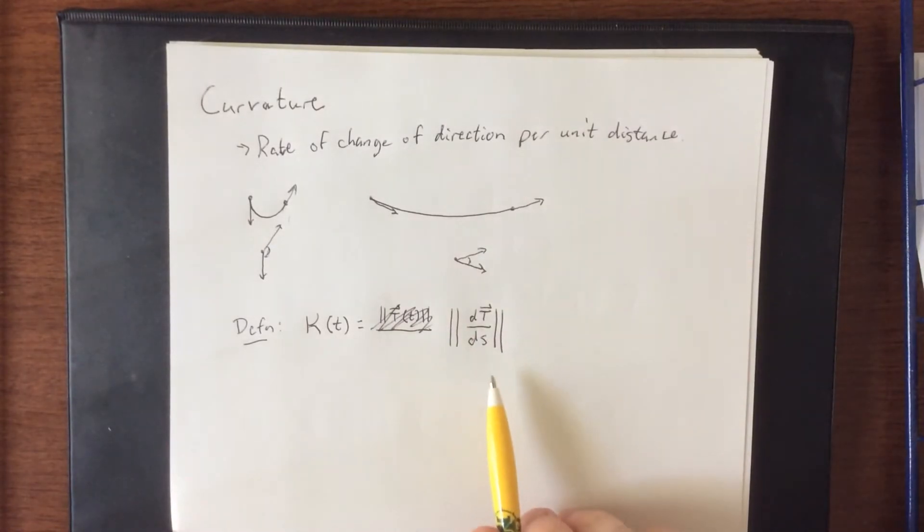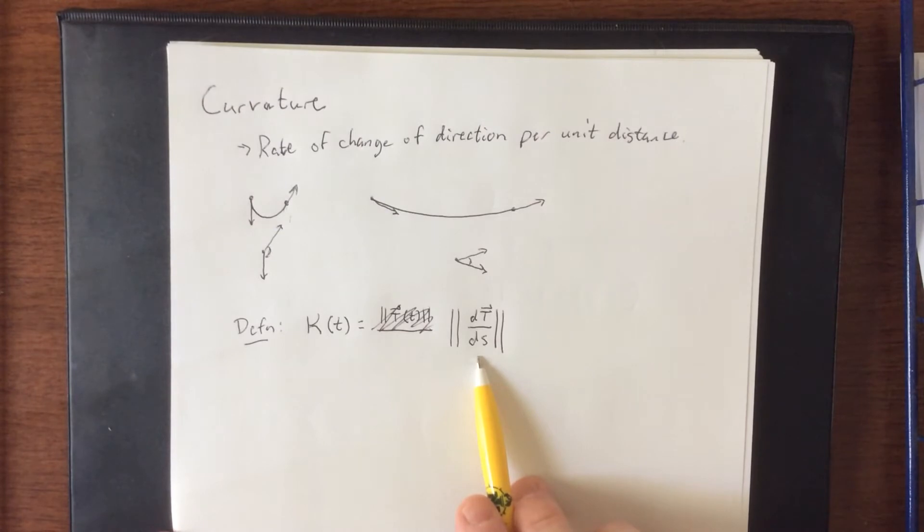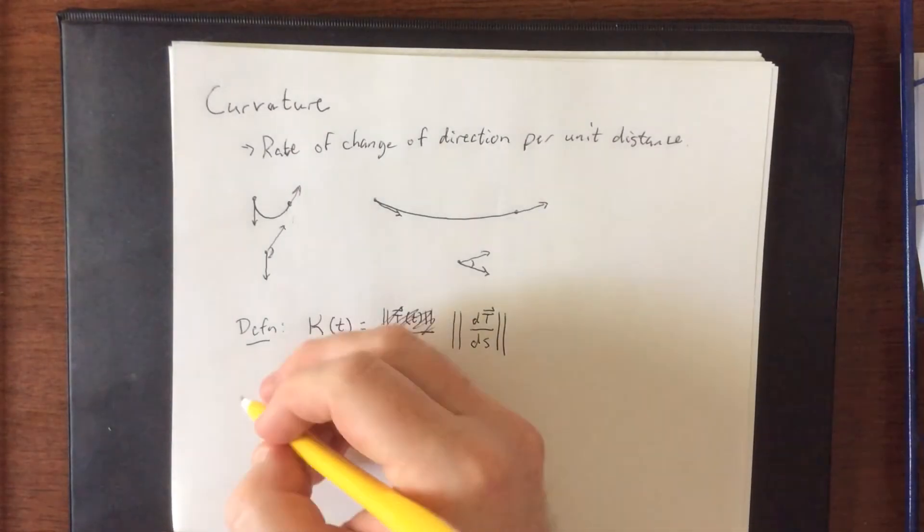In order for us to take this derivative, we need to have the original curve parameterized in terms of its arc length. We've already seen exactly how much fun that is. It was not. So we're going to come up with an alternate definition.